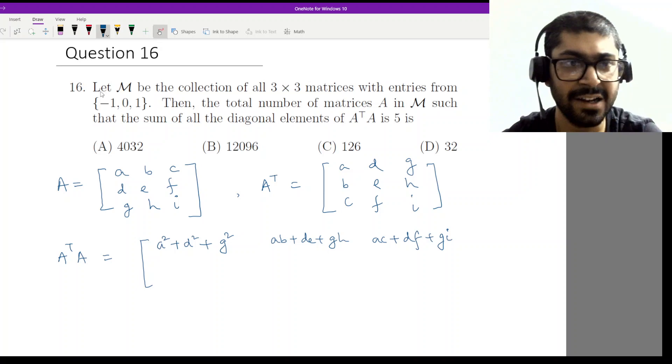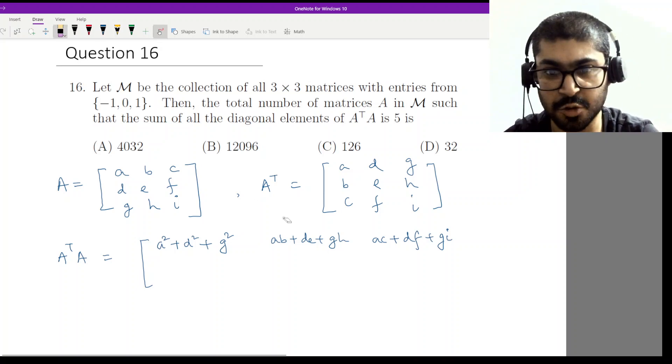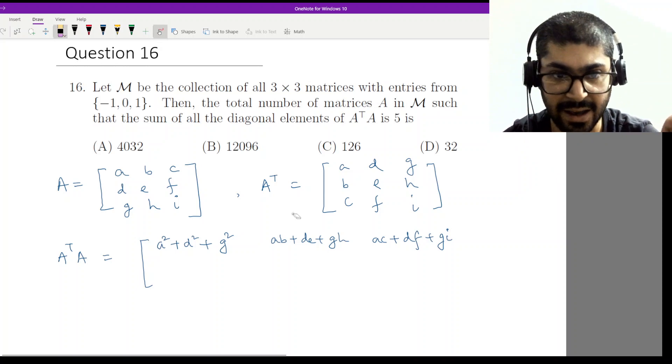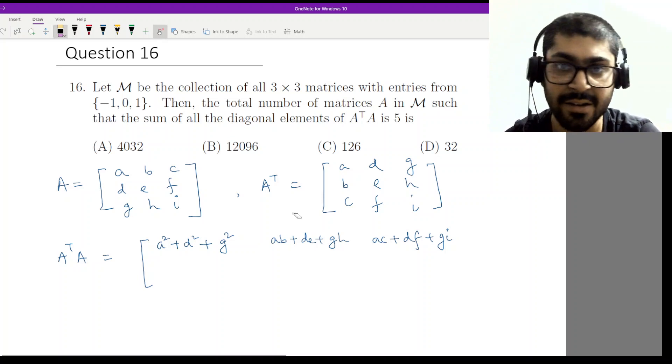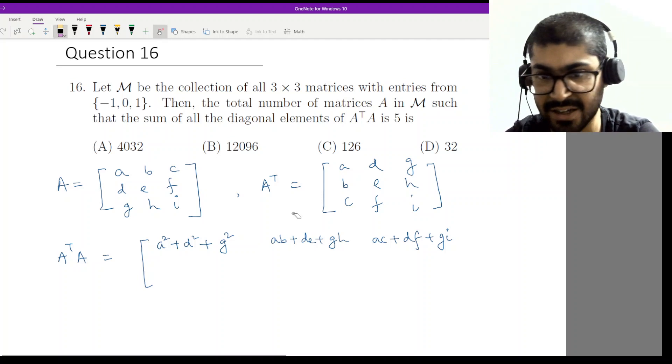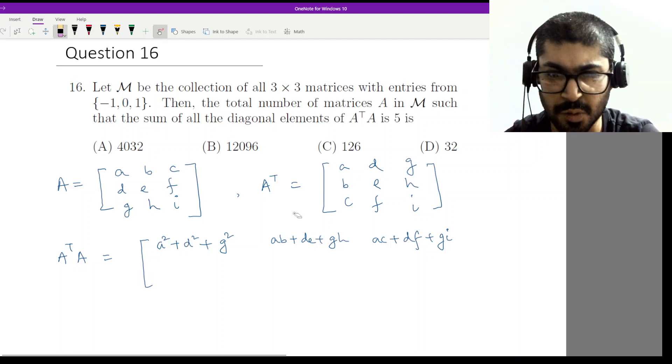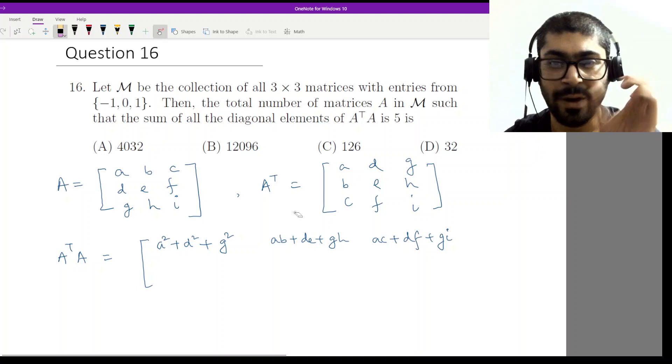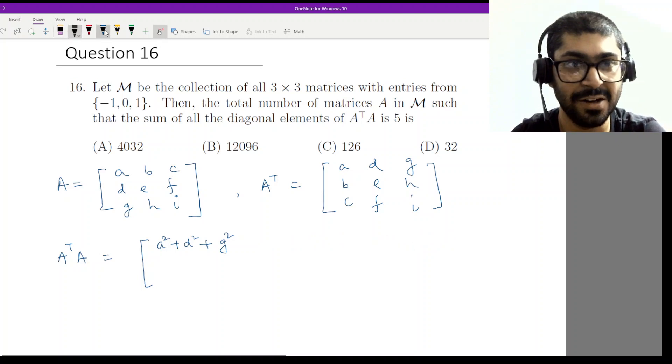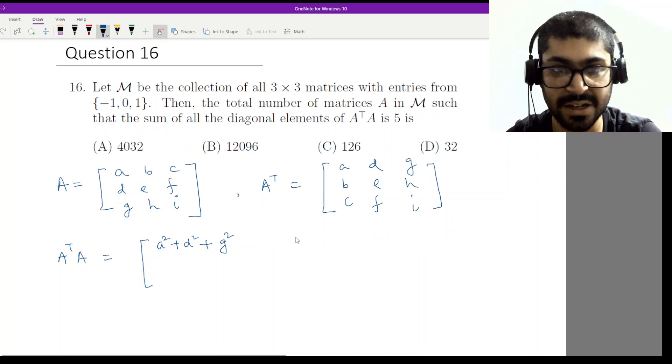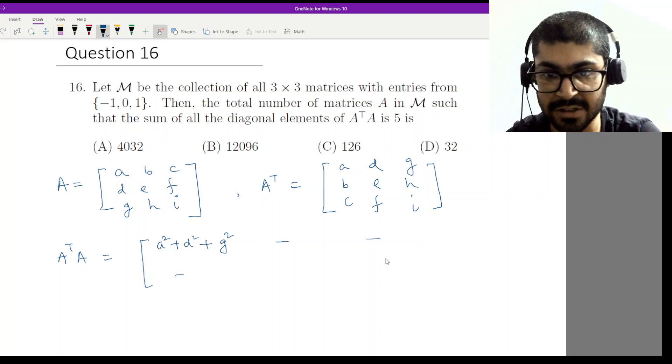Technically we do not need to calculate this. We need only the diagonals, right? So why would we do all of that? This is a trick that you can use in exams, especially in objective exams where you don't need to calculate the positions that you do not need.